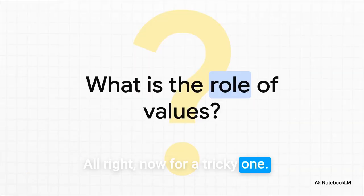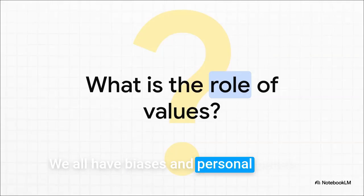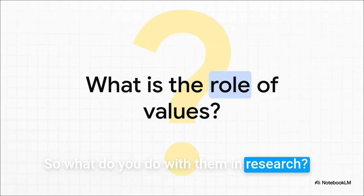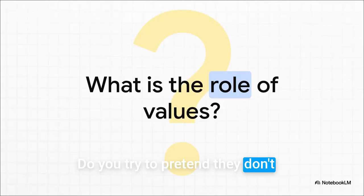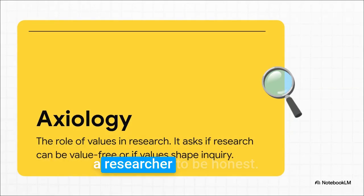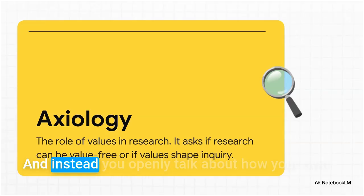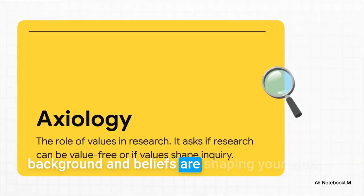Now for a tricky one. We all have values, biases, and personal beliefs. So what do you do with them in research? Do you try to pretend they don't exist? Or do you lean into them? This brings us to axiology — the role of values. This question really forces a researcher to be honest. Are you aiming for a completely value-free, objective stance? Or do you accept that that's pretty much impossible, and instead openly talk about how your own background and beliefs are shaping your work?